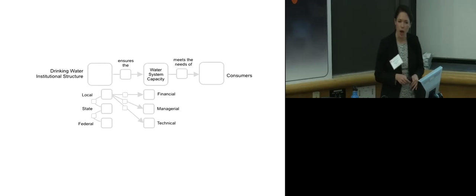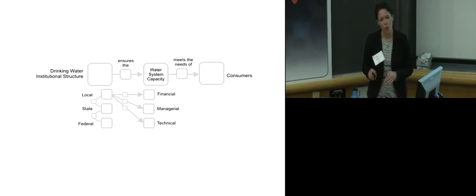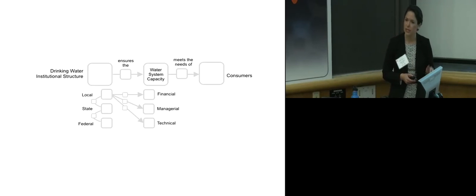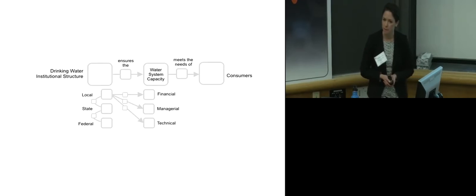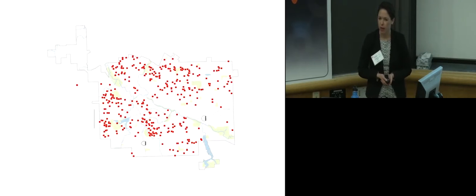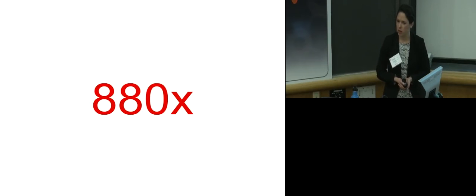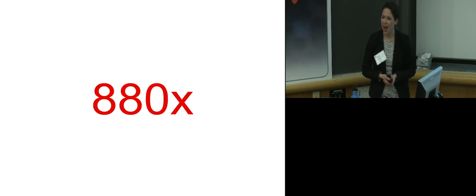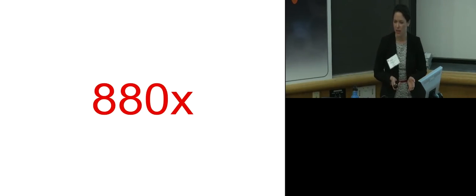Local officials are on the ground and have a direct relationship with the water system capacity and ensure the financial, managerial, and technical capacity of the system. This didn't work in Flint. 400 homes had levels of lead above the federal level. In one home of Lee Aaron Walters, the level was 880 times the federal limit. This is a level reserved for toxic waste. What happened?